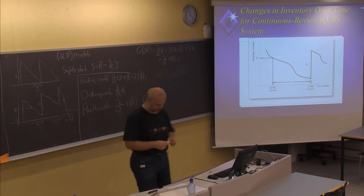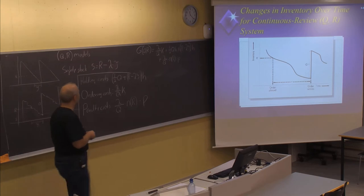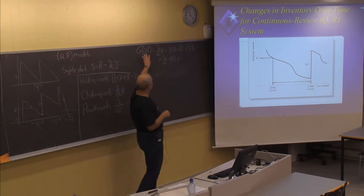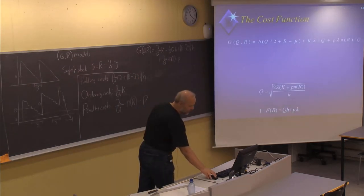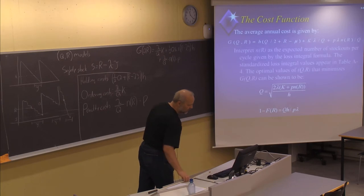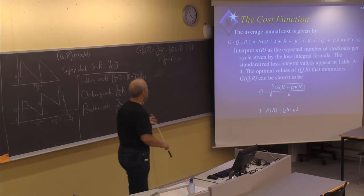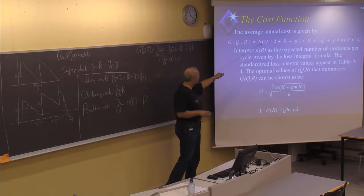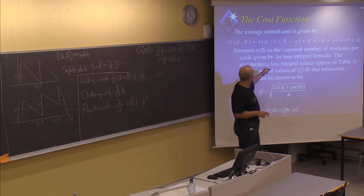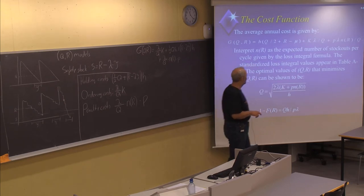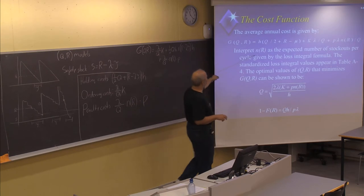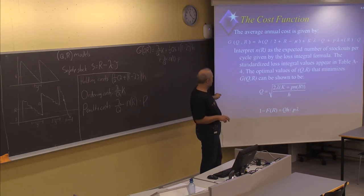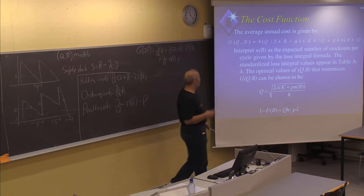Now we have a cost function dependent on two variables, with expressions for the different types of costs. We have the same cost function with the holding cost, the setup cost, and the penalty cost. The expected number of units short per cycle is given by the loss integral formula.